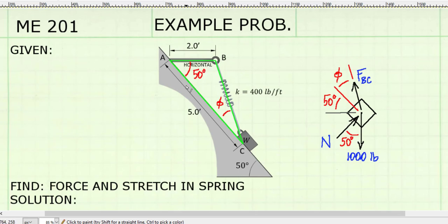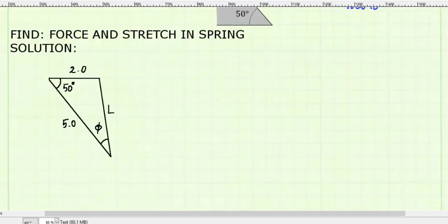So with two sides and an angle, we've got enough information to find the angle phi and the length of side BC. So I've drawn a triangle that represents the geometry in our problem, and I will need to find angle phi and L, and I'm going to use the law of cosines to find the length L.